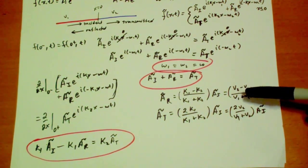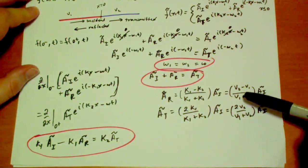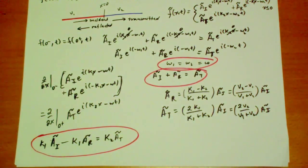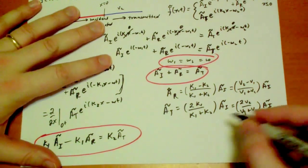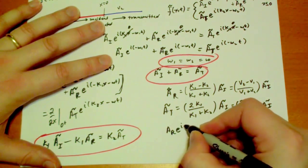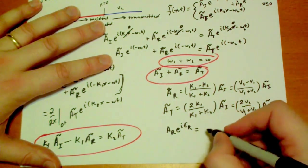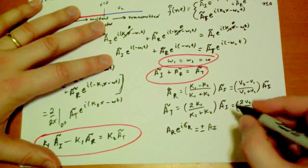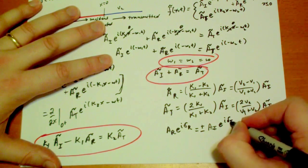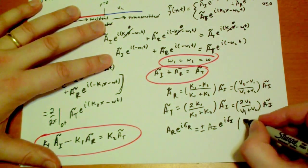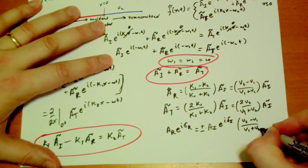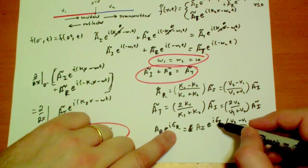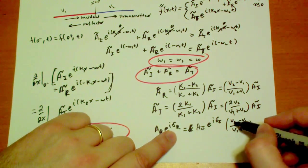But if the second velocity is faster, so the string is lighter on this side, then we're going to have a positive relationship between ar and ai, the reflected amplitude and the incident amplitude. And so that will imply that the phase constants for those two amplitudes have to be the same. So ar e to the i dr is going to equal, if the velocity is greater, it's going to be positive. If the velocity is smaller, it's going to be negative. A i e to the i di times this minus v1 over v1 plus v2.